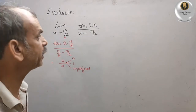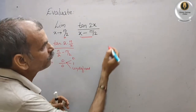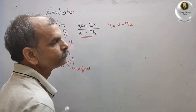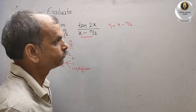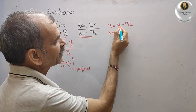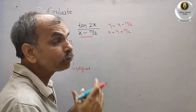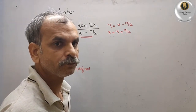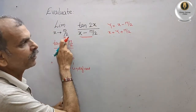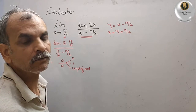To resolve this, we use a substitution. Let y = x - π/2, which means x = y + π/2. Now, when x = π/2, we get y = π/2 - π/2 = 0. So as x → π/2, y → 0.